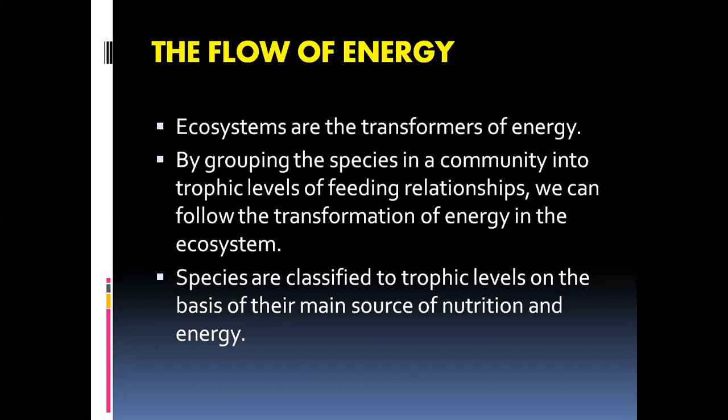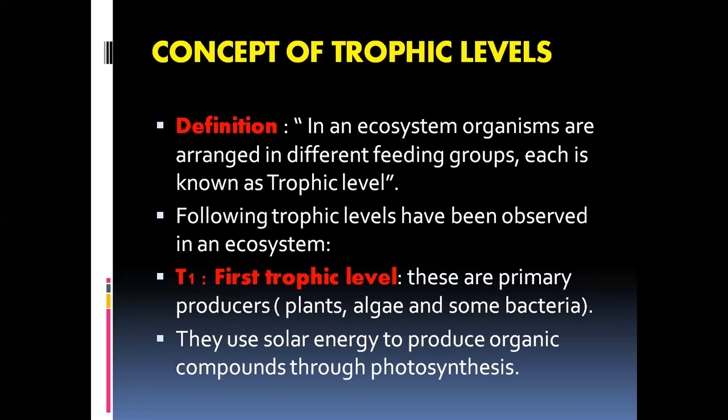Species are classified into trophic levels on the basis of their main source of energy. We group them based on their mode of nutrition and how they obtain energy. In an ecosystem, organisms are arranged in different feeding groups, and each is known as a trophic level. The following trophic levels have been observed in an ecosystem.